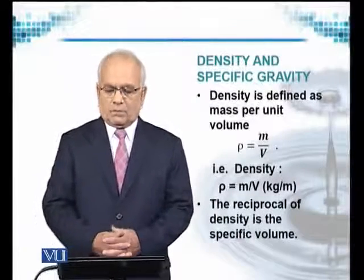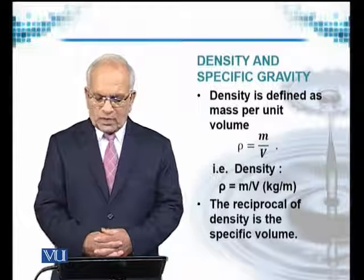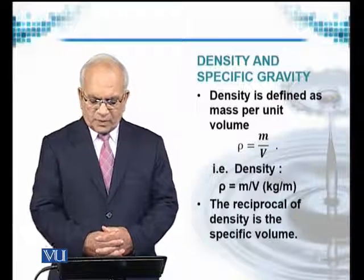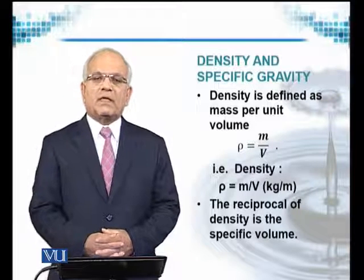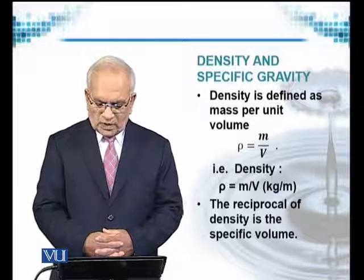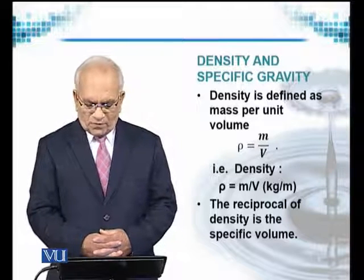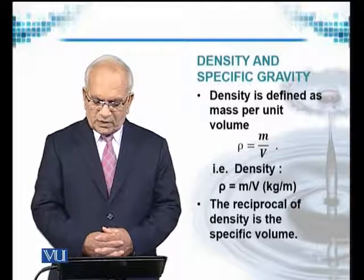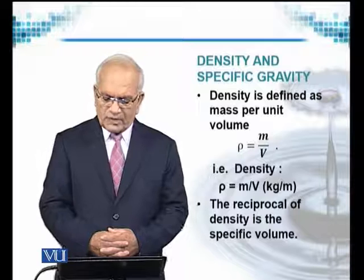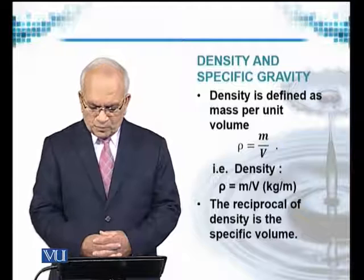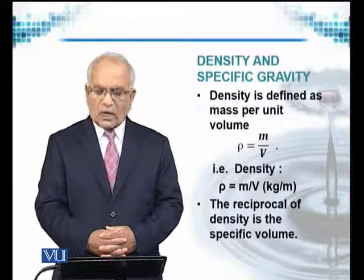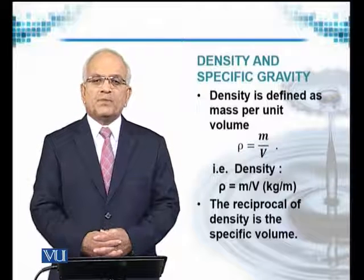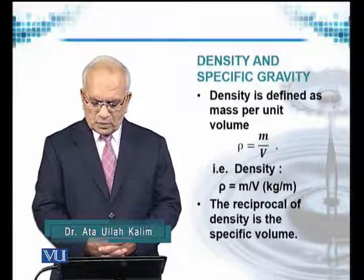We come to describe density and specific gravity — two terms that we use in everyday life. Density is defined as mass per unit volume of any fluid under consideration. Since we are talking about fluids, we limit our discussion to these parameters for fluids only. Density is denoted by rho and is calculated as the ratio of mass over volume: rho = m/v, with units of kilogram per cubic meter in the metric system.